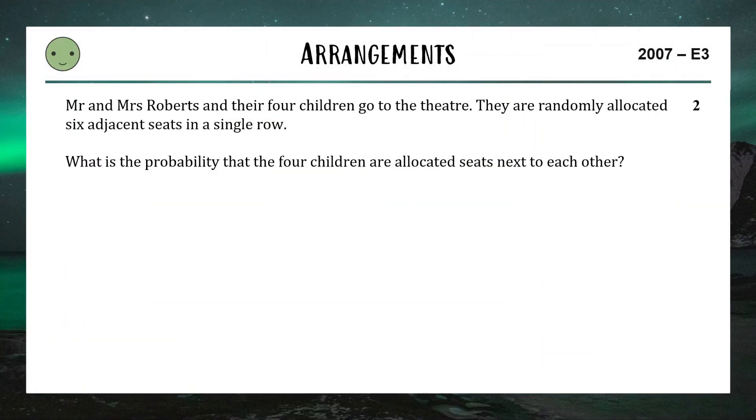Up next from a bit of an older question from the 2007 HSC, which is probably about as old as you are if you're watching this. We have Mr. and Mrs. Roberts and their four children go to a theater, they are randomly allocated six adjacent seats in a single row. What is the probability that the four children are allocated seats next to each other?